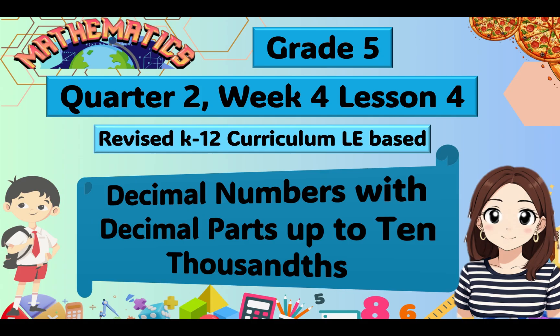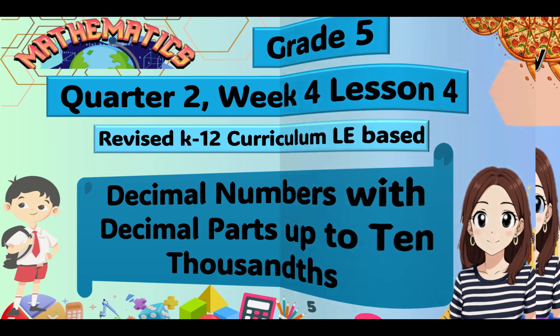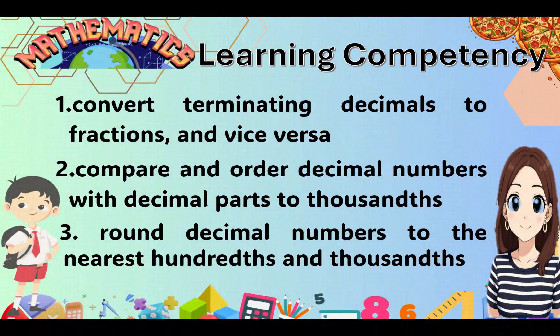Our topic is about decimal numbers with decimal parts up to 10,000. Our learning competencies are: first, convert terminating decimals to fractions and vice versa; second, compare and order decimal numbers with decimal parts to 1,000; and third, round decimal numbers to the nearest hundreds and thousands.